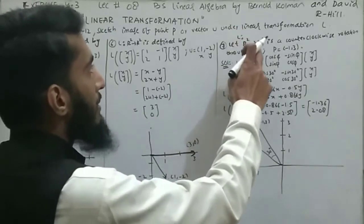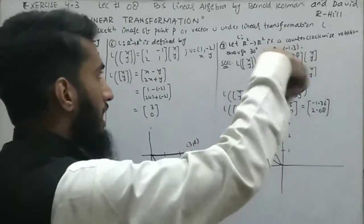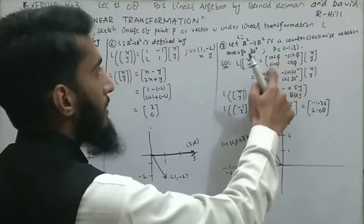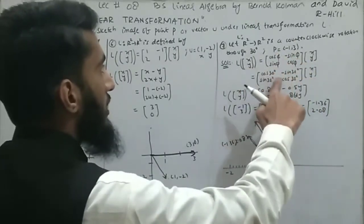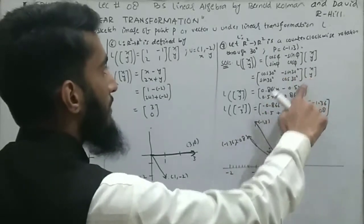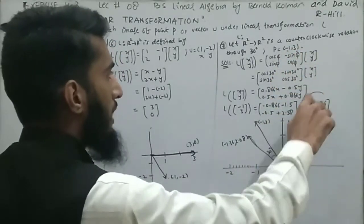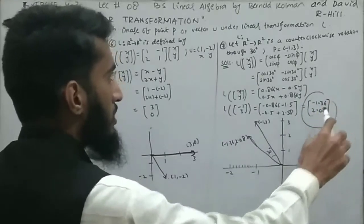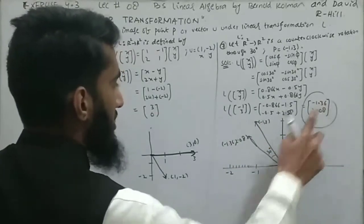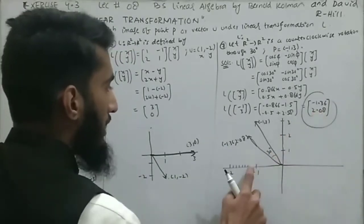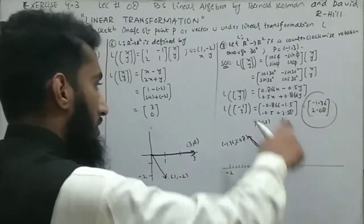Question 7: L is a counterclockwise rotation by 30 degrees from R² to R², while p = (-1, 3). For rotations, we use the matrix A = [[cosθ, -sinθ],[sinθ, cosθ]]. With θ = 30°, this gives (0.866x - 0.5y, 0.5x + 0.866y). Substituting x=-1, y=3 gives the image (-1.36, 2.08). The initial point (-1, 3) and final point (-1.36, 2.08) make a 30-degree counterclockwise angle.